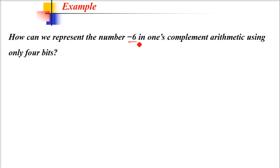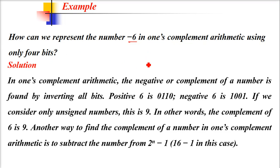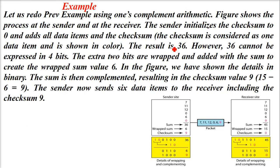How can we represent -6 in one's complement arithmetic using 4 bits? We have 0110, which is 6. The negative of 6 is 1001. The negative is just the one's complement. This is 9. The complement of 6 in binary is 9. Just change 0 to 1. This is our checksum.